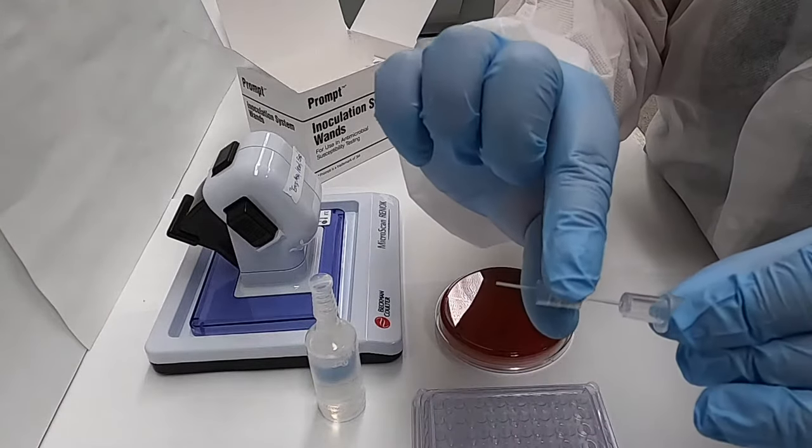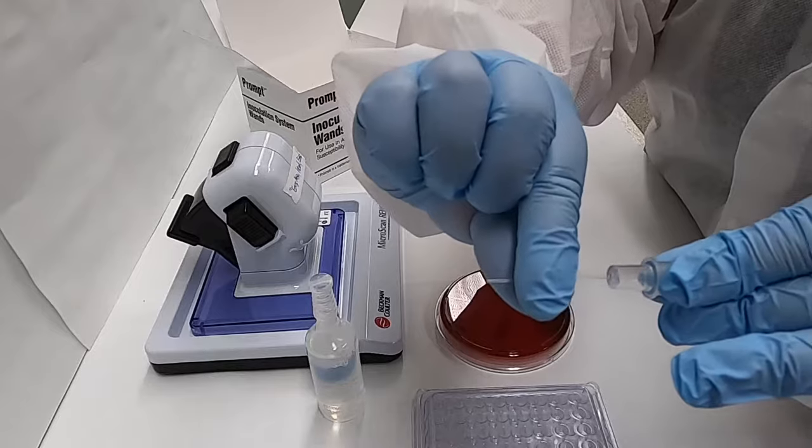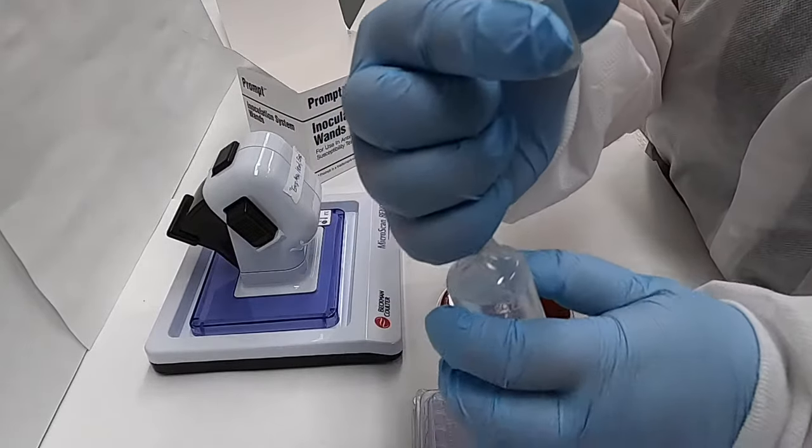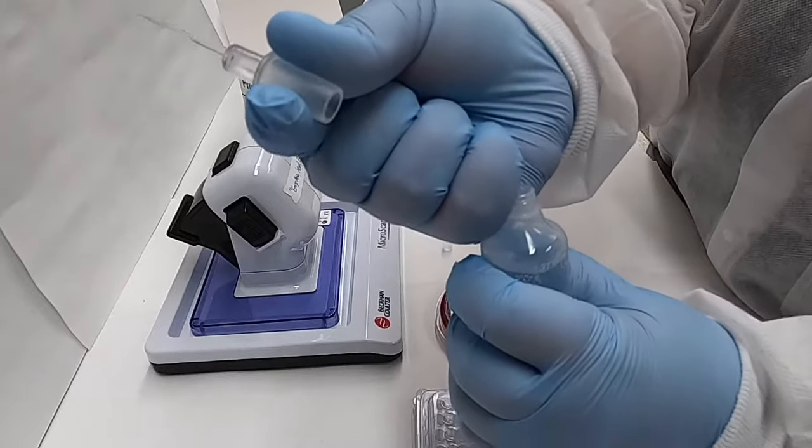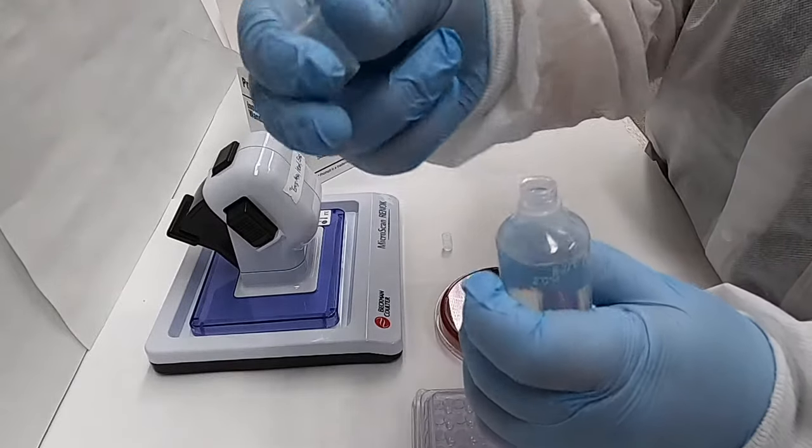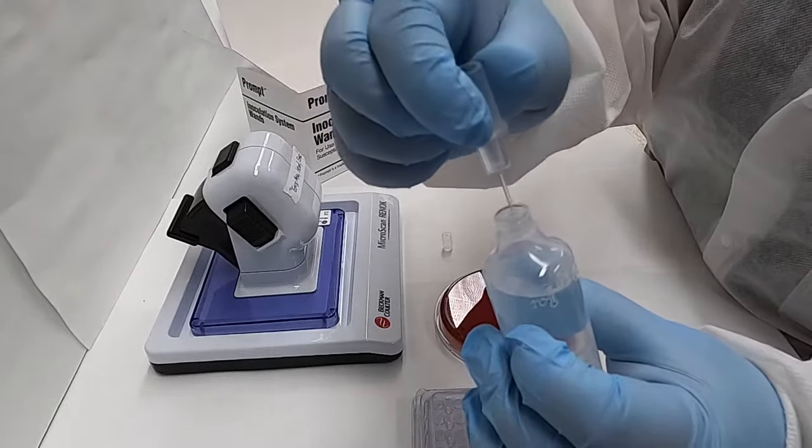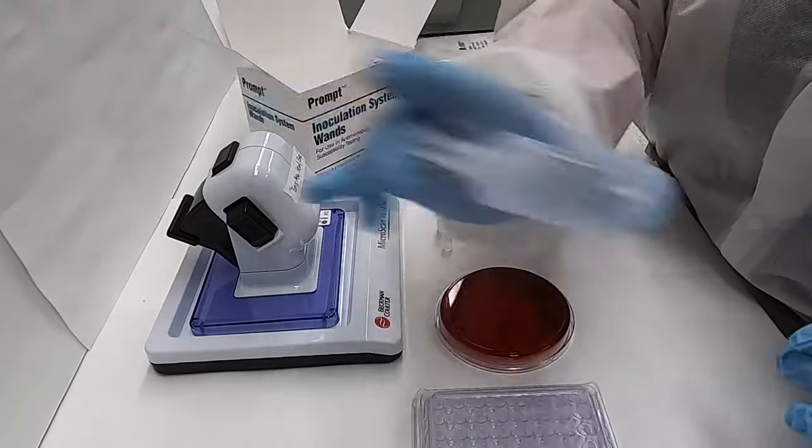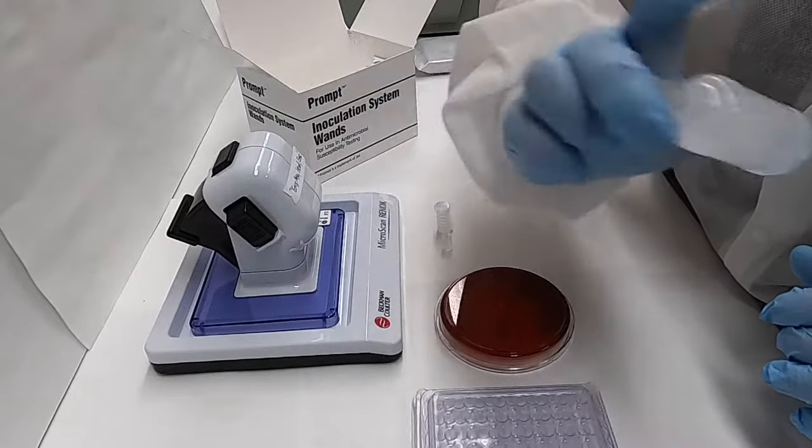We start by touching three colonies and then removing the wand collar in order to get rid of excess bacteria. The wand is then inoculated into the liquid culture media and that media is then shaken vigorously to ensure that the suspension is homogeneous.